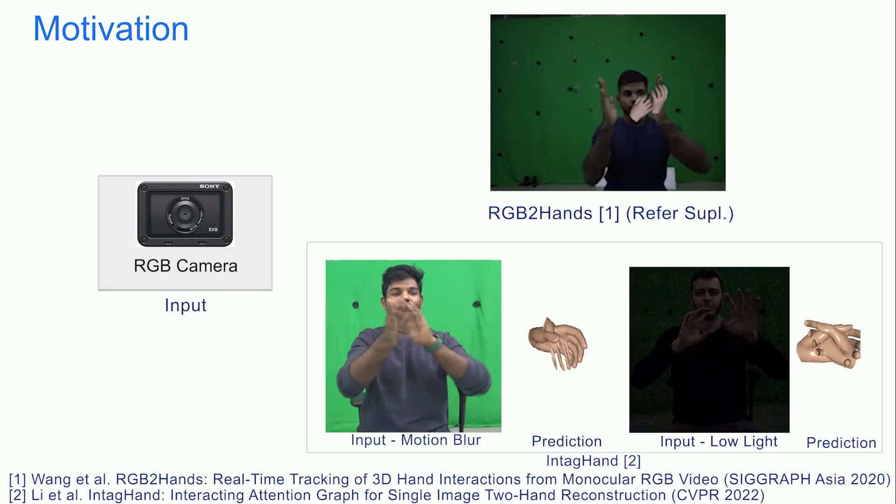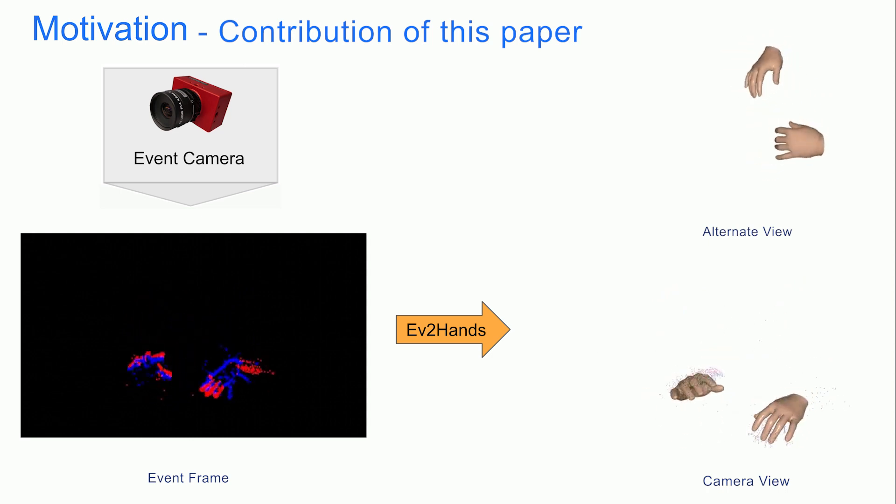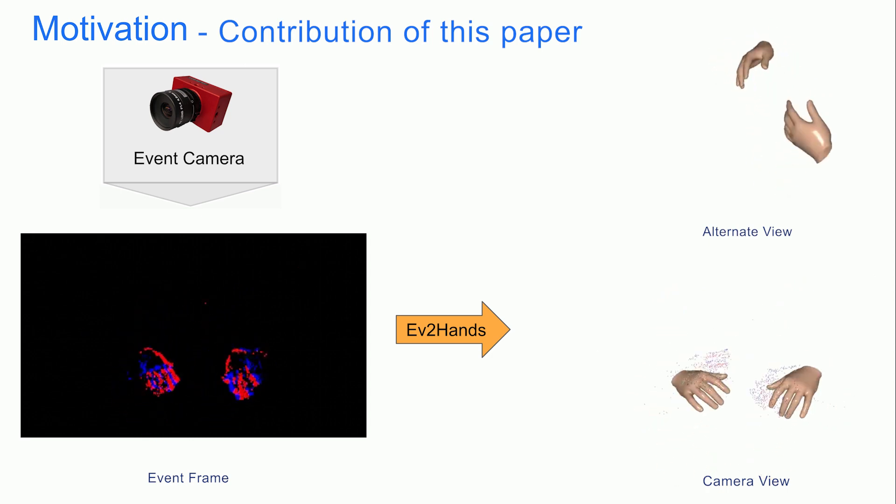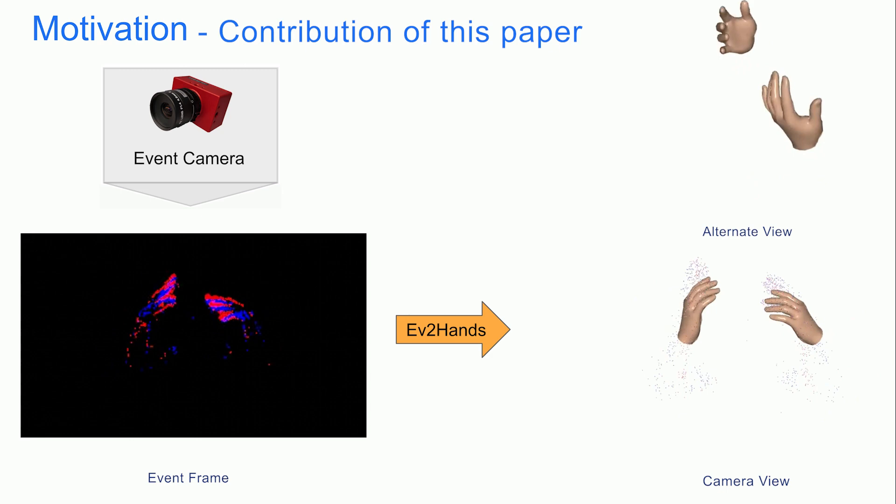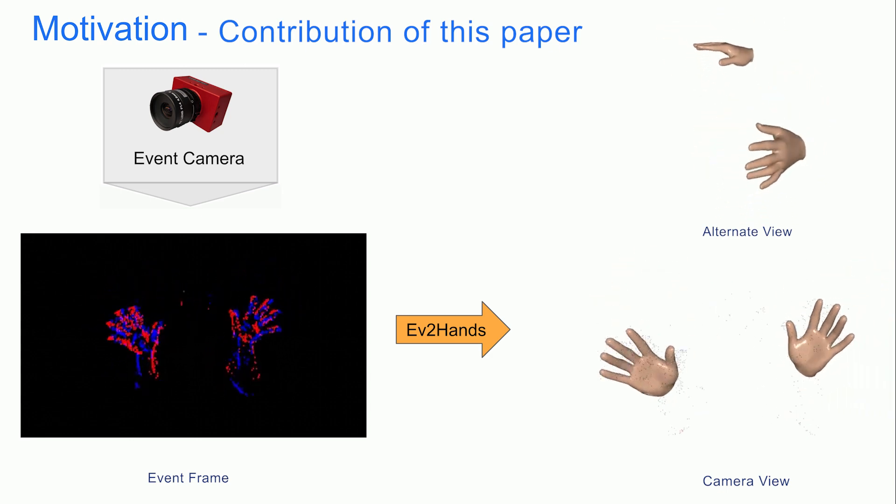On the other hand, RGB-based methods for two-hand 3D reconstruction cannot be repurposed for event streams. To this end, we propose Ev2Hands, a learning-based framework to estimate the translation, shape, and pose of each hand in the global 3D space from a monocular event stream.